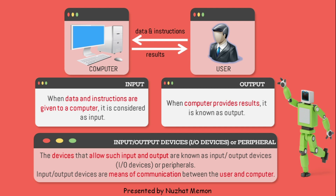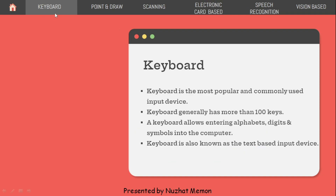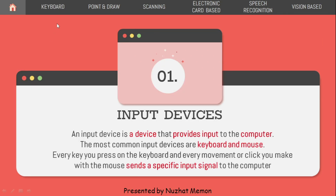For the interaction of user with the computer, input-output devices are necessary. We will begin with input devices, which has six categories: keyboard, point and draw, scanning, electronic card based, speech recognition, and vision based.